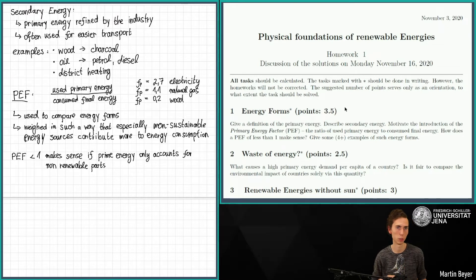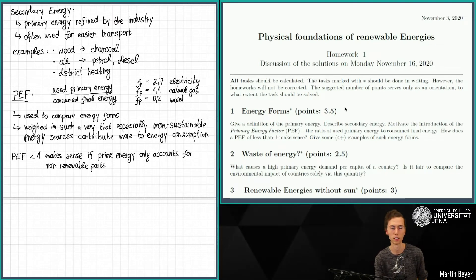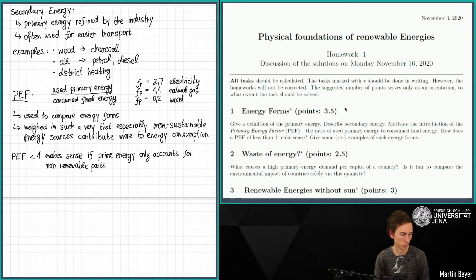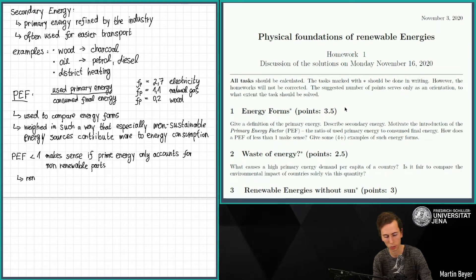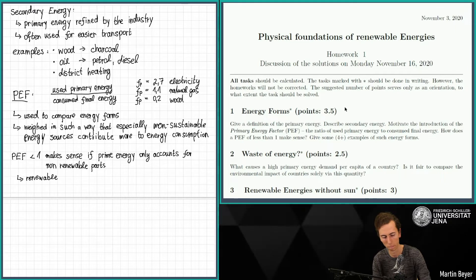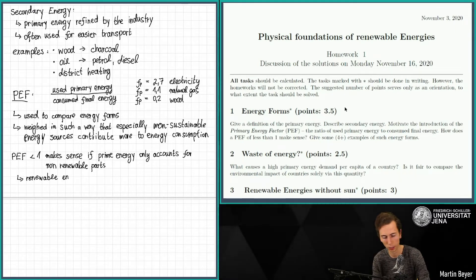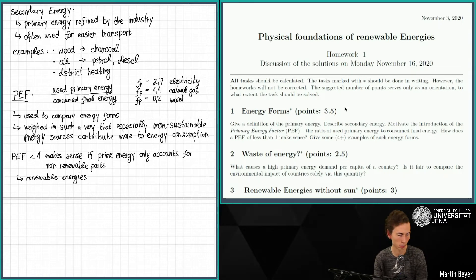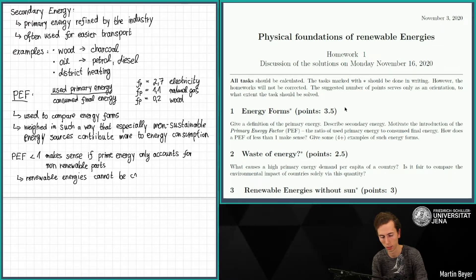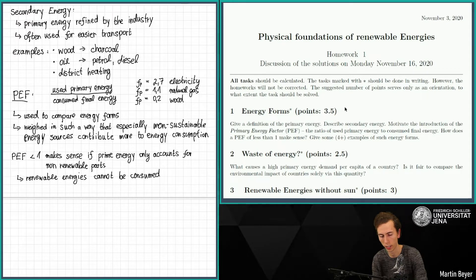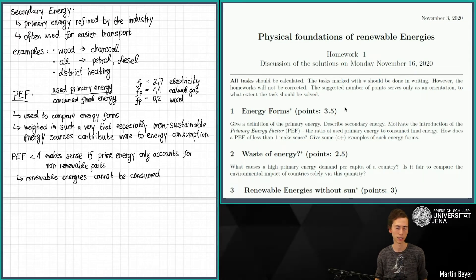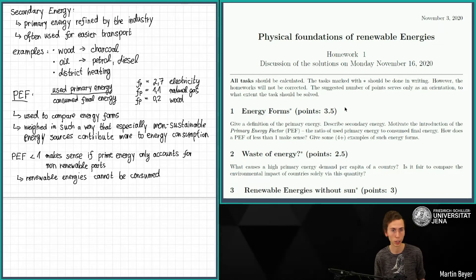For renewable energies like solar cells or windmills, their primary energy factor is in fact zero. Renewable energy cannot really be consumed in a way — there is no way that by absorbing all the sunlight it disappears. We have an infinite supply of sunlight or wind that we could use to produce energy.